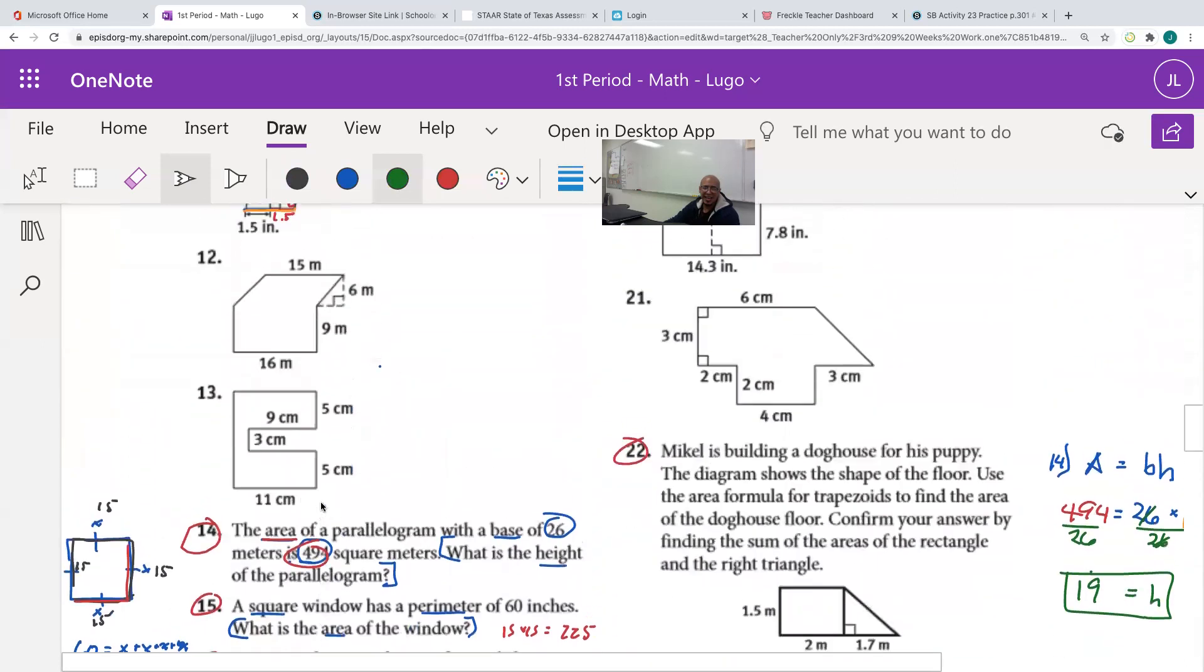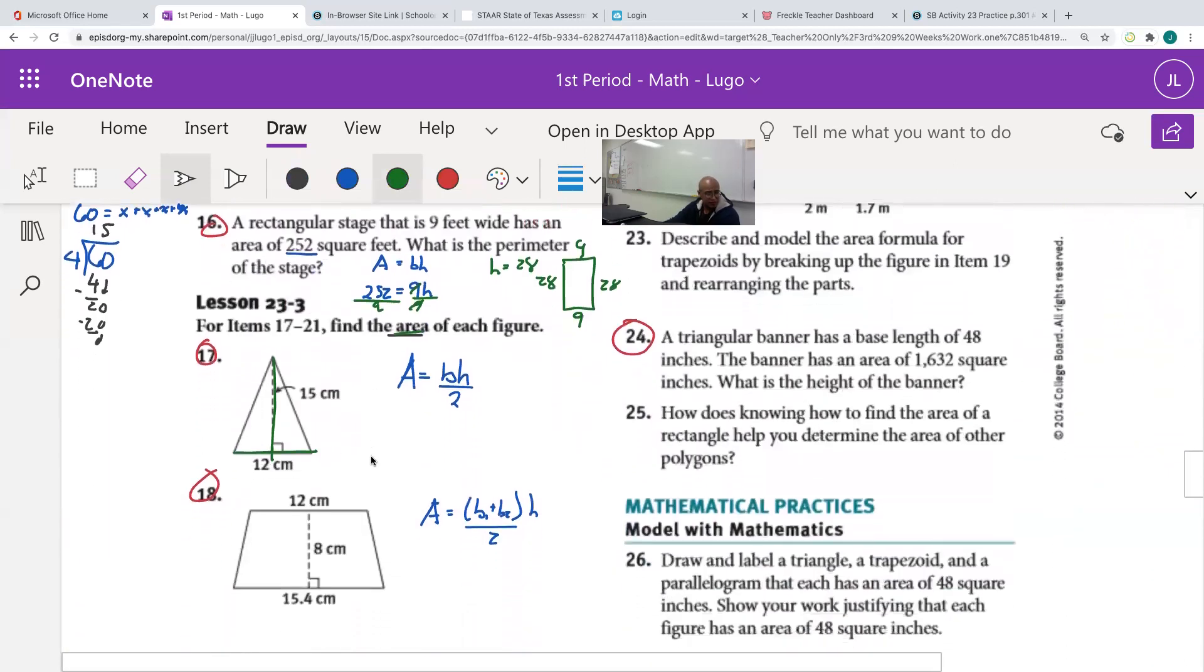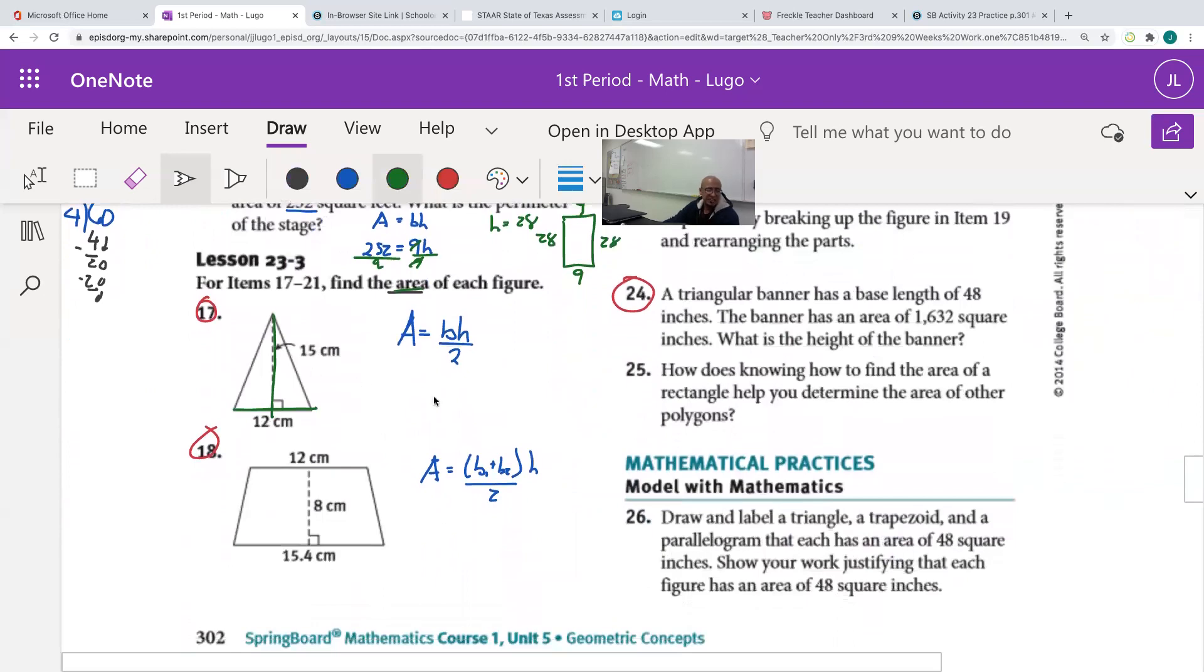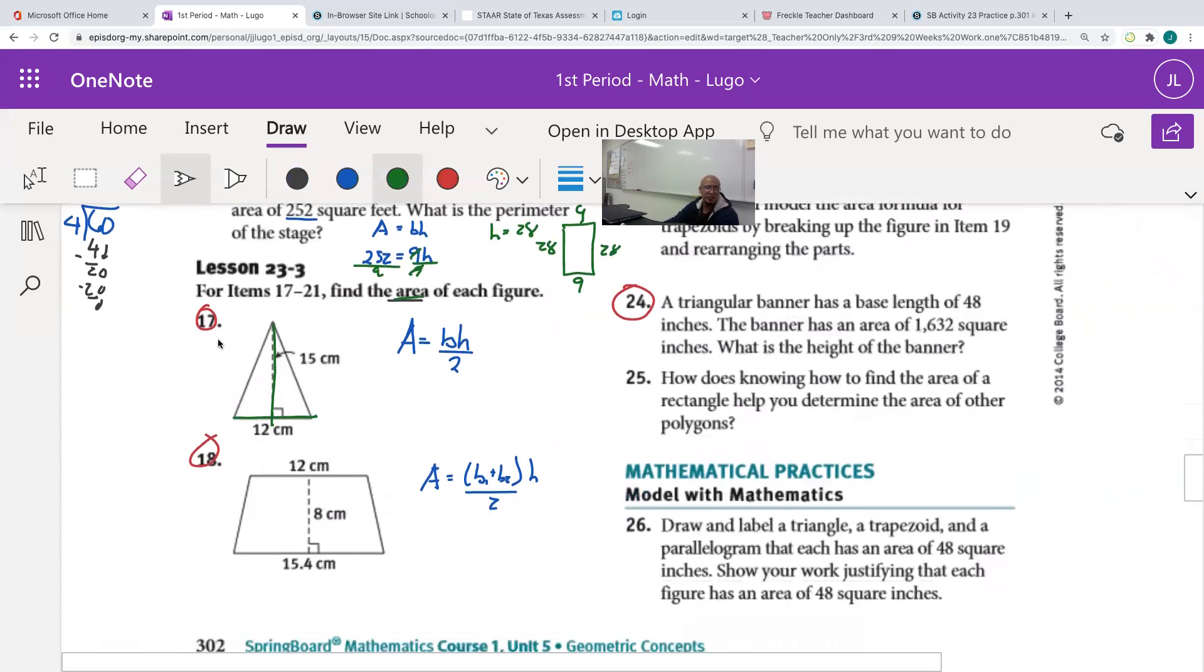17, 18, and 19. Ladies and gentlemen, we need to find the area of each of these shapes. But obviously, these are different shapes, so they're going to have different formulas. For example, on 17, we have a triangle. The formula for a triangle is area equals the base times the height divided by two. So the base times the height, and then whatever we get divided by two. 18 and 19 are both trapezoids. In a trapezoid,